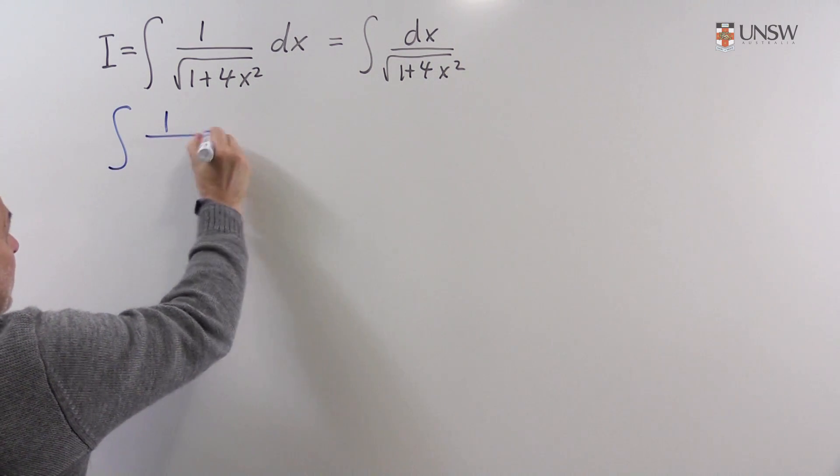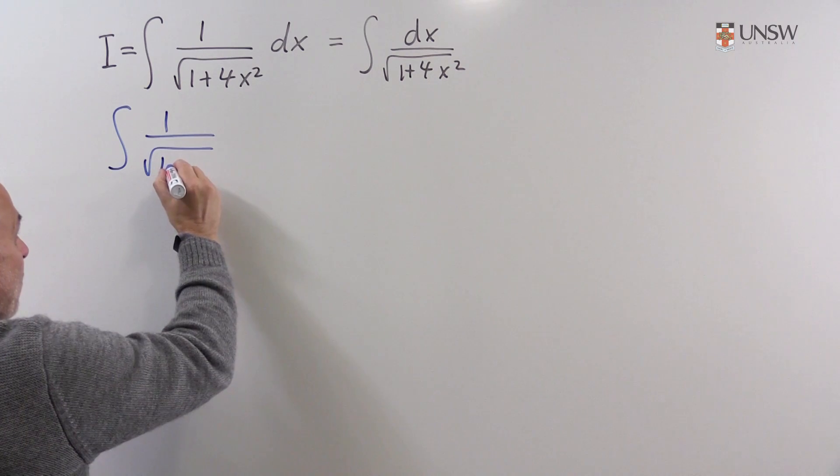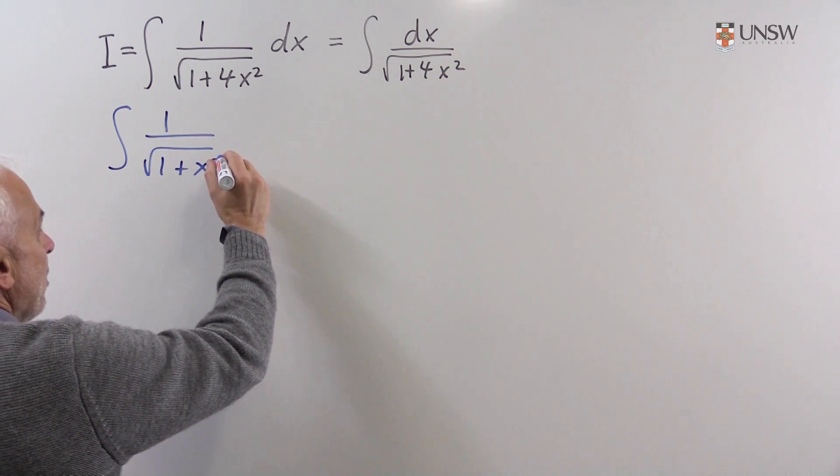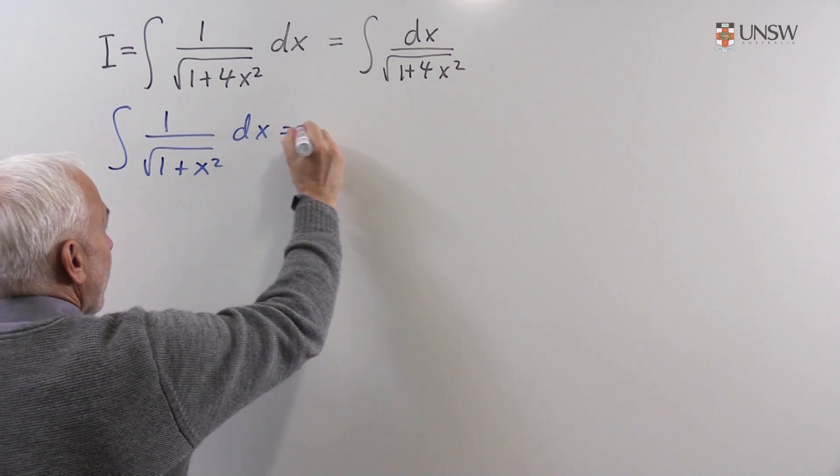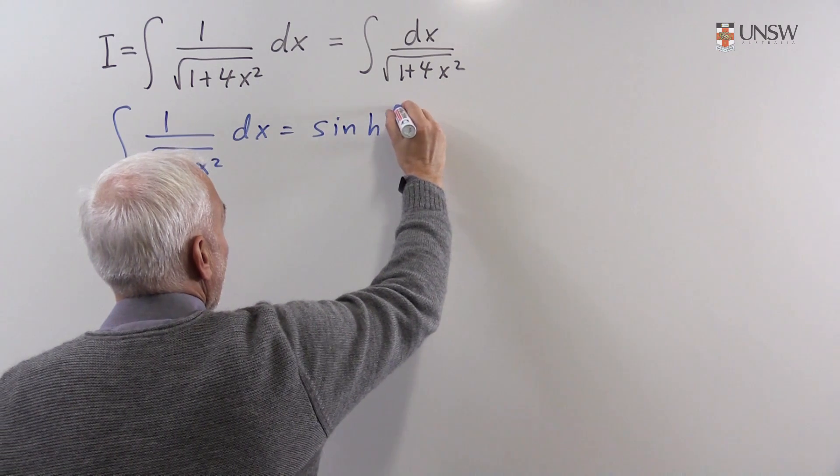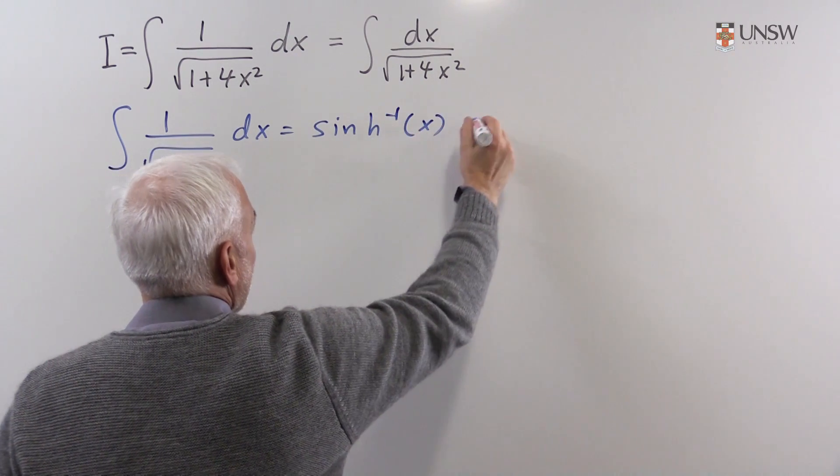So the more standard formula is that the integral of 1 over square root of 1 plus x squared dx equals sinh inverse of x plus a constant.